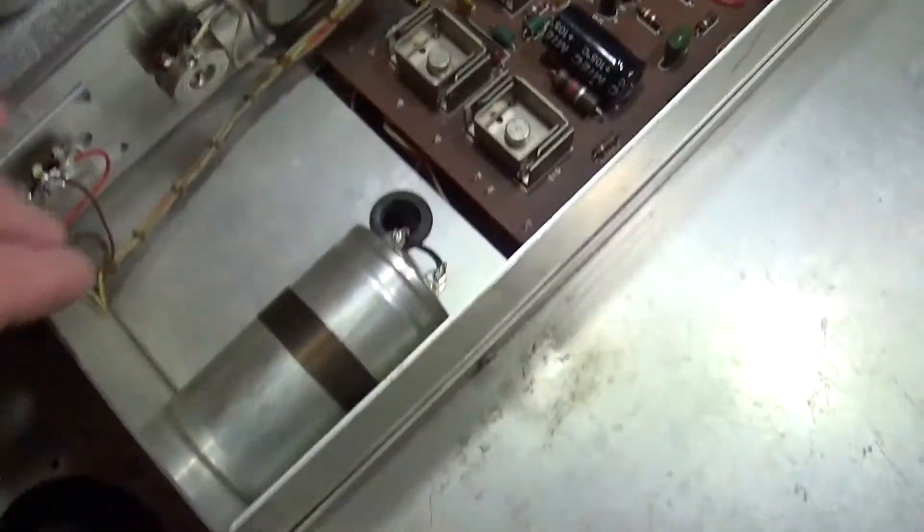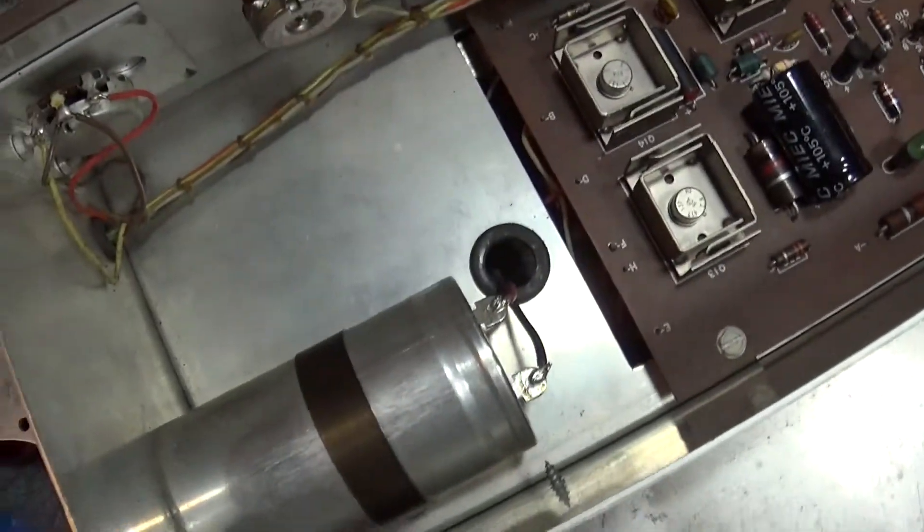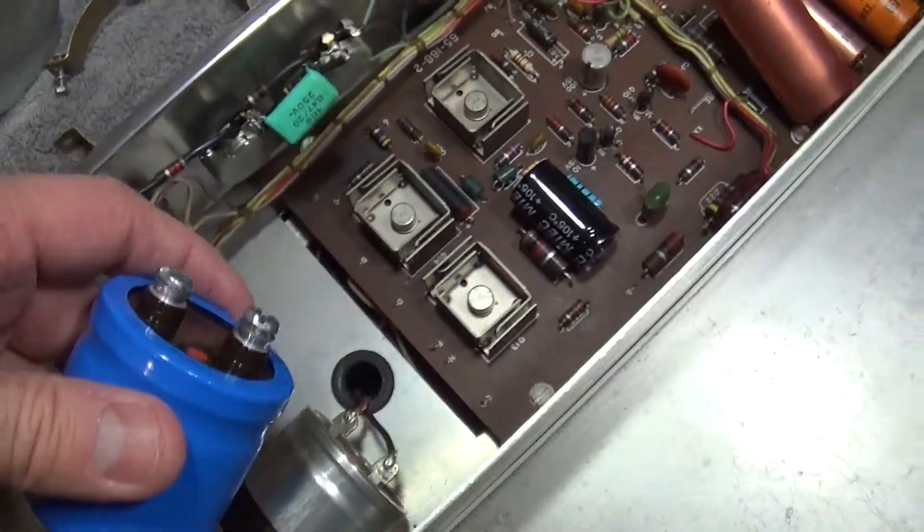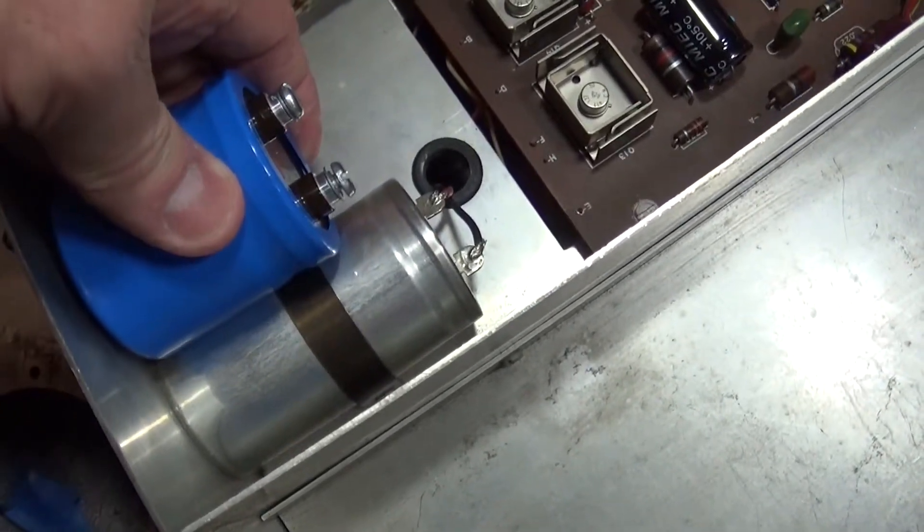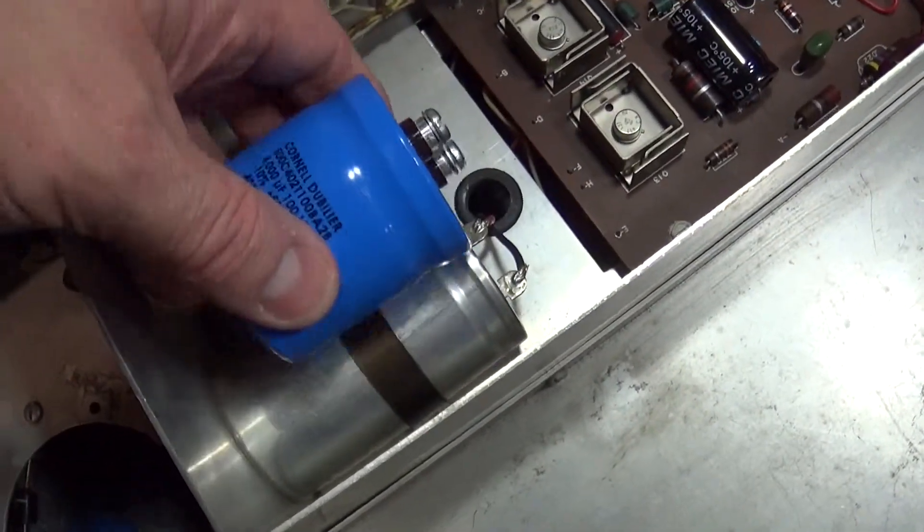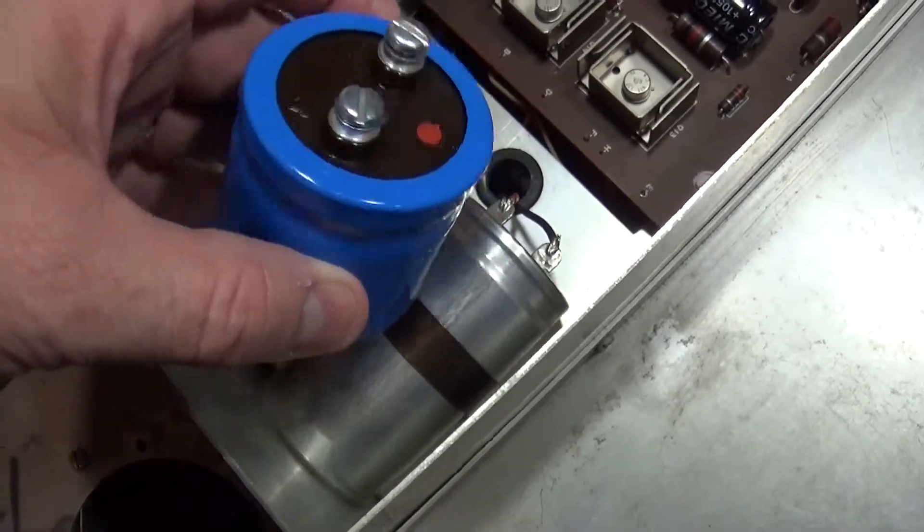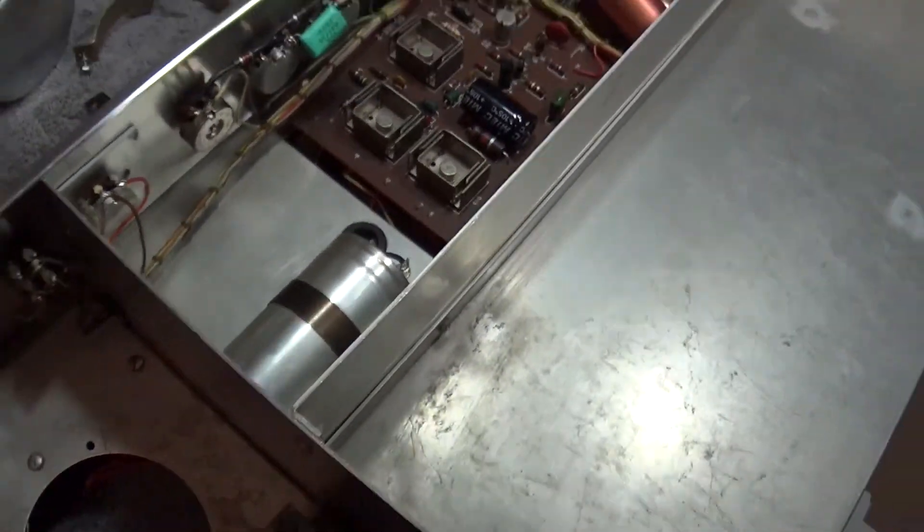I also got the replacement for this 4,000 microfarad cap, and it looks like this. You'll notice it's smaller. No problem. We're just going to mount it here, on this bracket. Same place. No problem at all. We have that. We also got some other parts.